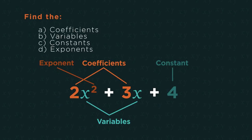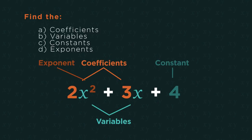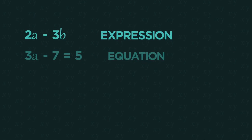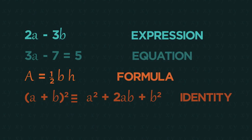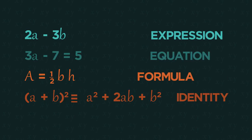So there we have the names for four different parts of an equation. Can you remember what the difference between an equation, an expression, formulae, and identity is?